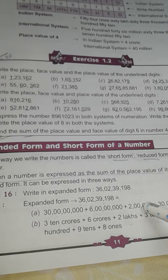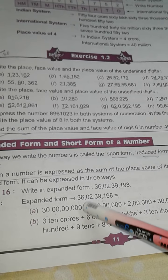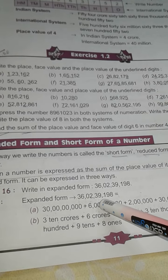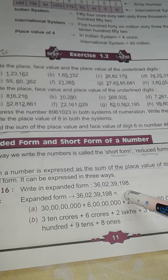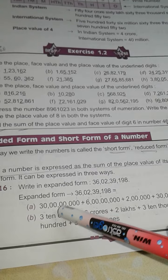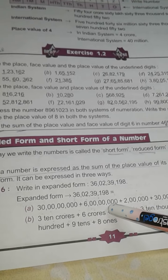First one is: we are given 36 crore, 2 lakh, 39,198. 36 crore means, children, first you write 30 crore, then 6 crore.